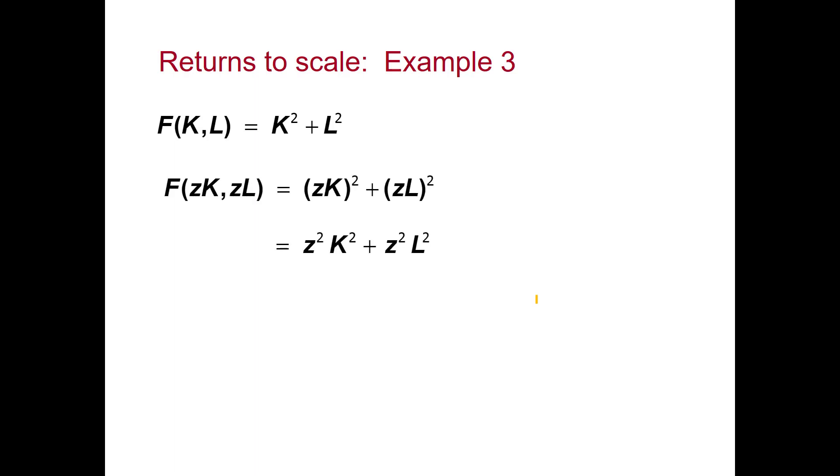We can expand and collect like terms. So we'll have Z squared times K squared plus L squared. This is our original production function. So we have Z squared times our original production function.